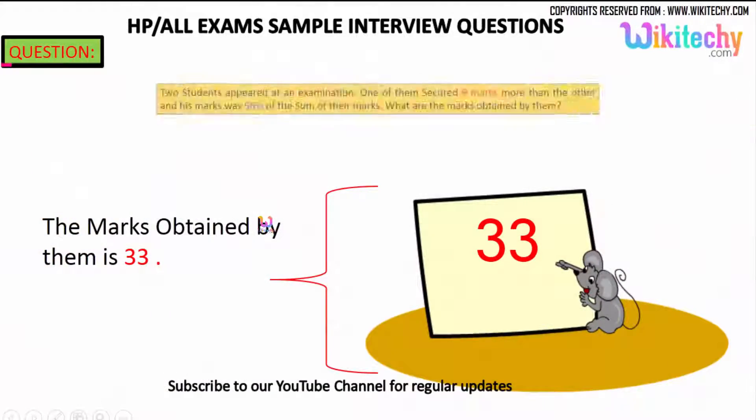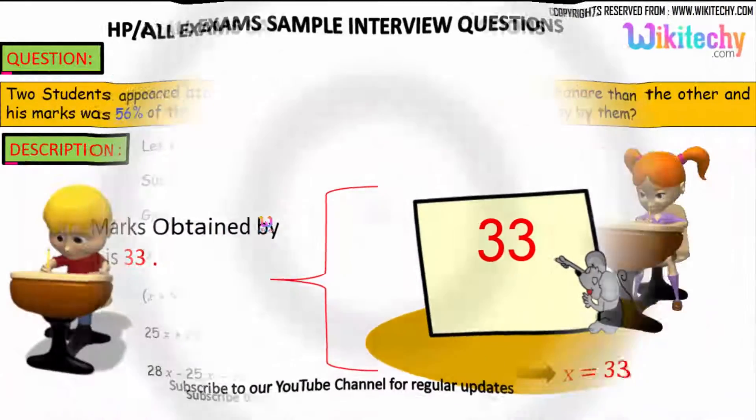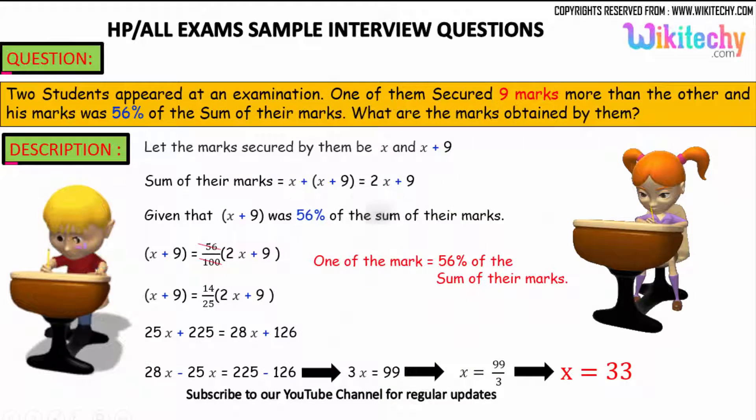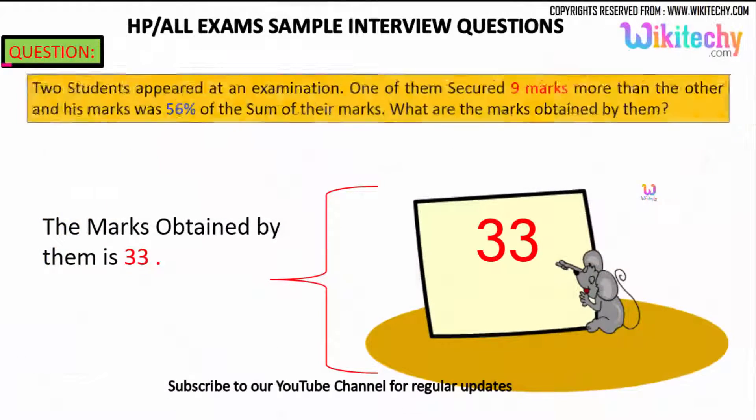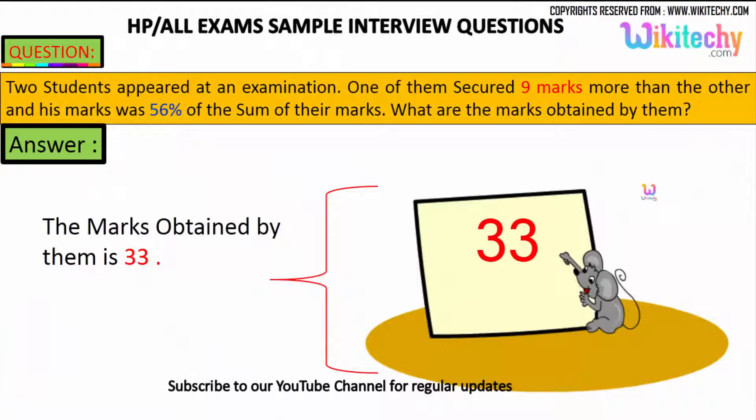The value of X is 33, which means this student got X plus 9, which is 33 plus 9 equals 42. So he got 42 marks and she got 33 marks. The marks obtained by them are 42 and 33.